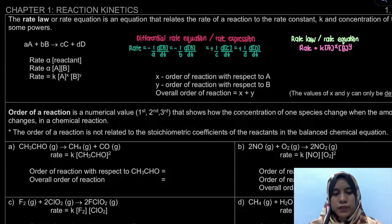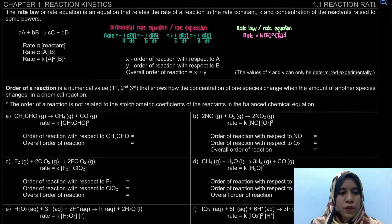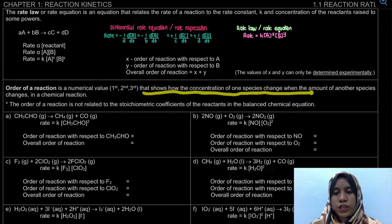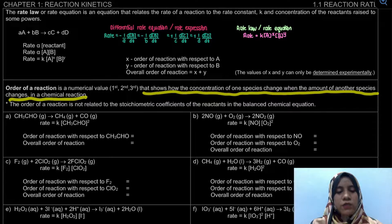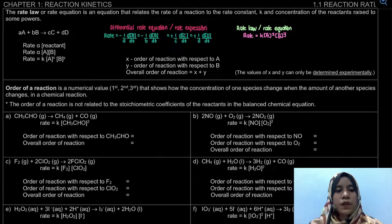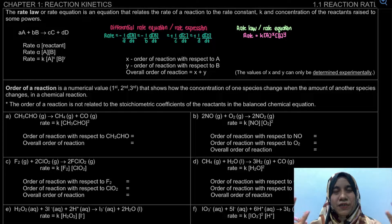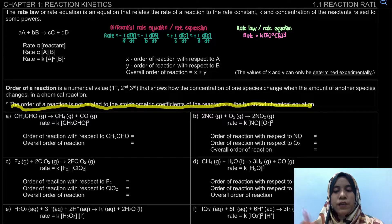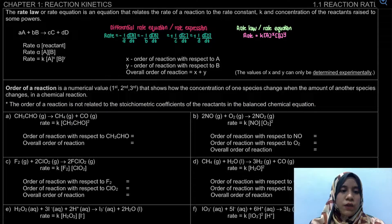So what is actually the order of reaction? The order of reaction is a numerical value — it could be zero, first order, second order, or third order — that shows how the concentration of one species changes when the amount of another species changes in a chemical reaction. Importantly, the order of reaction is not related to the stoichiometric coefficient of the reactants in the balanced chemical equation. The power in the rate law does not depend on stoichiometry; we have to look based upon our rate law.